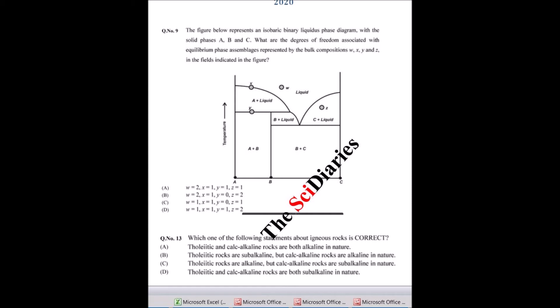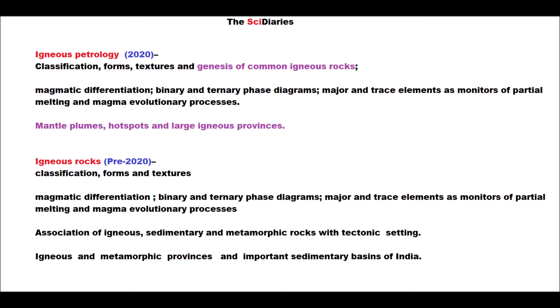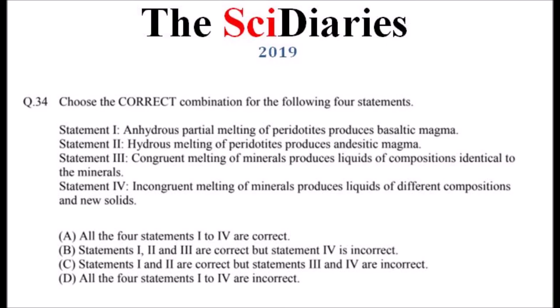Probably in 2021, I expect they might include questions from igneous petrology in the MSQ section — maybe one or two questions. If you look at the 2019 paper, you'll find questions like 'choose the correct combination: statement one, two, three.' This is similar to the IIT JEE pattern where they used to ask assertion-reasoning type questions. GATE introduced this similar pattern last year.